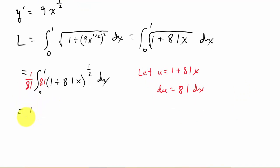So that's going to give me 1 over 81, and that's going to be u to the 1 half du. So the u I put in for 1 plus 81x. And the du I put in, see the 81 dx? I put du in for that.